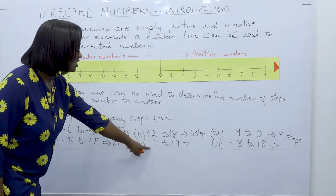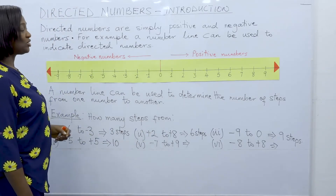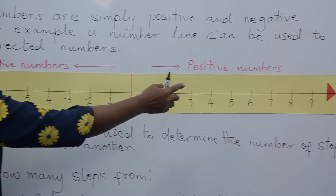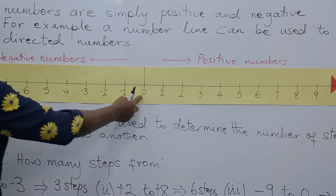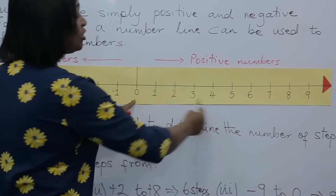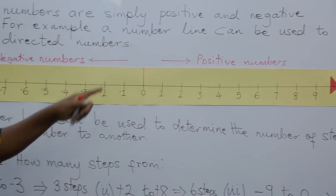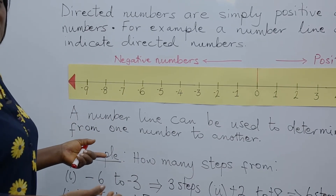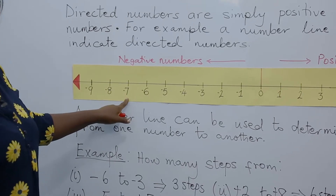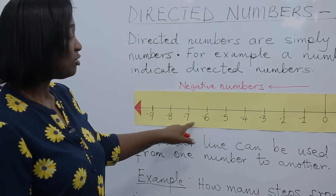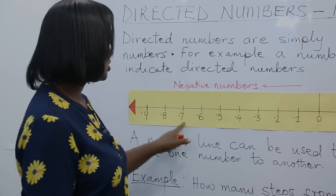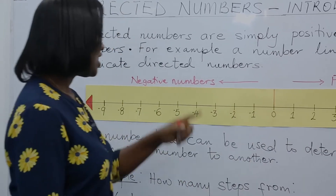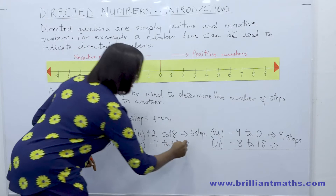From minus seven to plus nine — how many steps do we have? From minus seven to zero, we have seven steps. And from zero to nine, we have nine steps. So nine plus seven is sixteen. No need to count anymore — we can simply add because we are going from the negative side of zero to the positive side. Nine plus seven is sixteen.